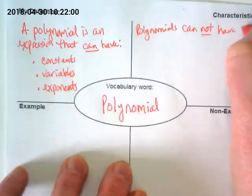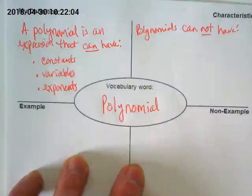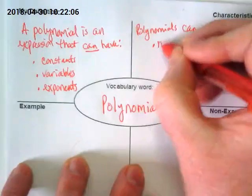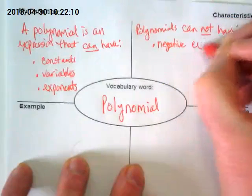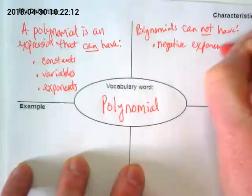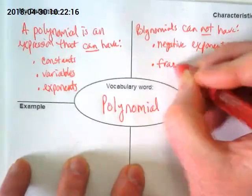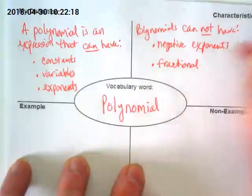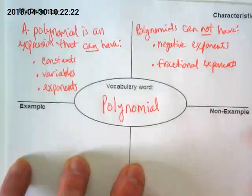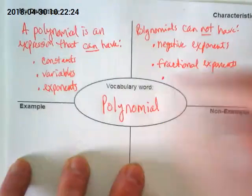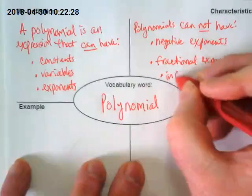A characteristic of polynomials is we also have a list of things that they cannot have. They cannot have negative exponents. They cannot have fractional exponents. And they cannot have terms in them that are infinite.